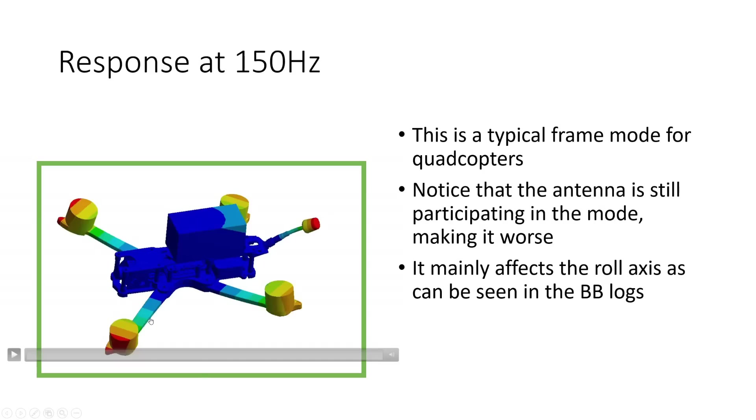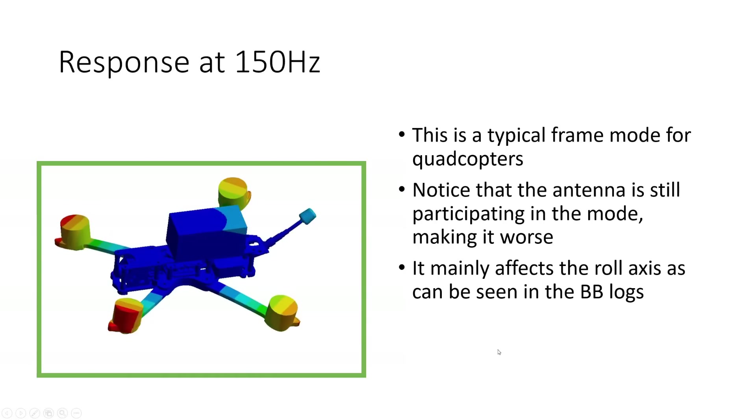Let's look now at the response at 150 hertz, which is the first proper frame resonance that this iFlight XL5 frame has. So this is a very typical frame resonance for a quadcopter. We have the opposite motors on the diagonal moving together up and down. We can also see that the antenna is still participating in this mode and that means it's increasing the mass participation factor of this mode because its mass is moving. And that means it's going to make the vibrational mode worse than it would otherwise be. Now we can see from the black box log and from this simulation that this mode mainly affects the roll axis. We don't see much effect on pitch at all.